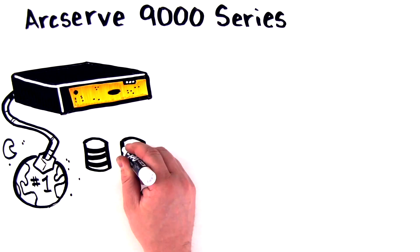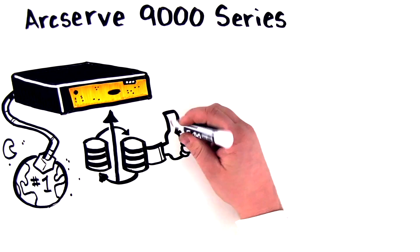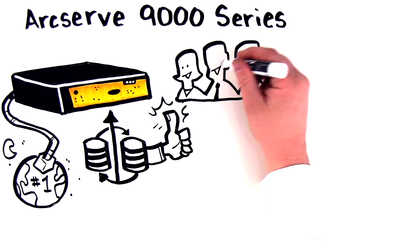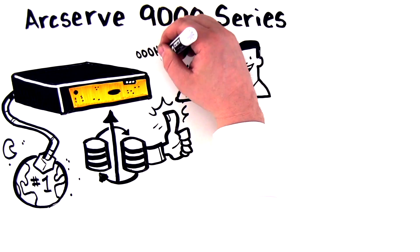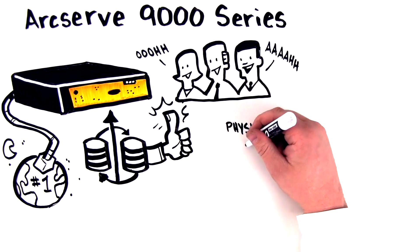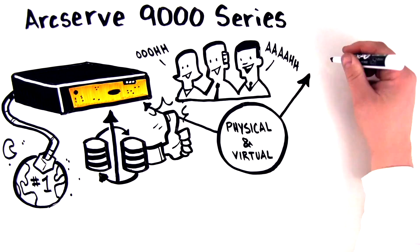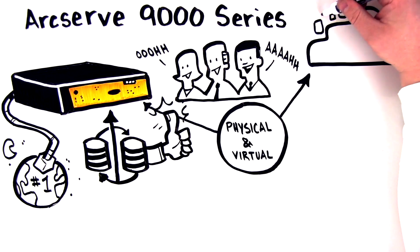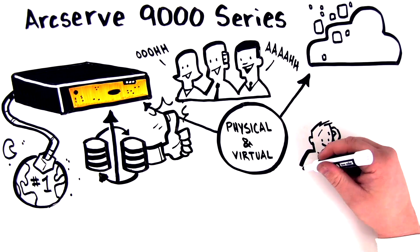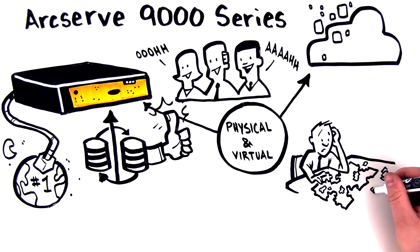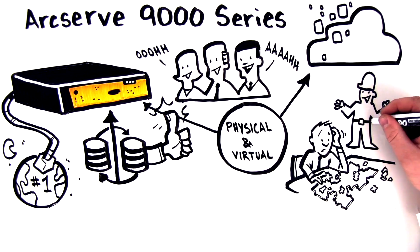The first of its kind, the ArcServe 9000 appliance series allows you to spin up copies of physical and virtual systems directly on the appliance and in private, public ArcServe clouds, eliminating the piecemeal approach and do-it-yourself project of building a cohesive DR plan.